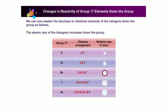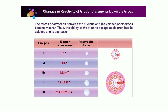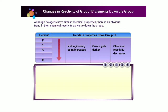We can now explain the decrease in chemical reactivity of the halogens down the group: the atomic size increases, the valence electrons are shielded from the nuclear attraction by more electrons in the inner shells, the forces of attraction between the nucleus and the valence electrons become weaker, and thus the ability of the atom to accept an electron decreases. Hence, the reactivity of the halogens decreases down the group.